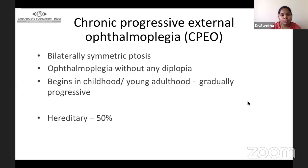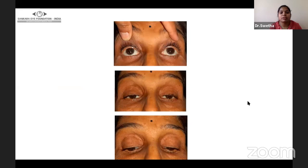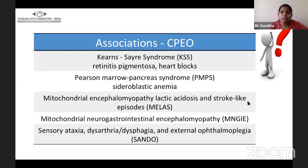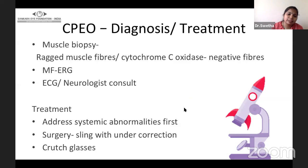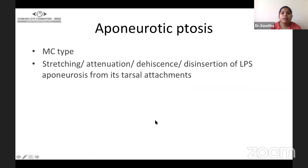Chronic progressive external ophthalmoplegia (CPEO) presents with bilateral symmetric ptosis and ophthalmoplegia without diplopia. It begins in childhood or adulthood and is gradually progressive; 50% may be hereditary. Here you can see the patient with bilateral severe ptosis with extraocular movement limitation in almost all directions. Muscle biopsy is the confirmatory diagnosis. In CPEO, multifocal ERG, ECG, and neurological consult should be performed in patients with significant associations. Treatment includes addressing the systemic abnormality first, followed by sling surgery with deliberate undercorrection and crutch glasses.